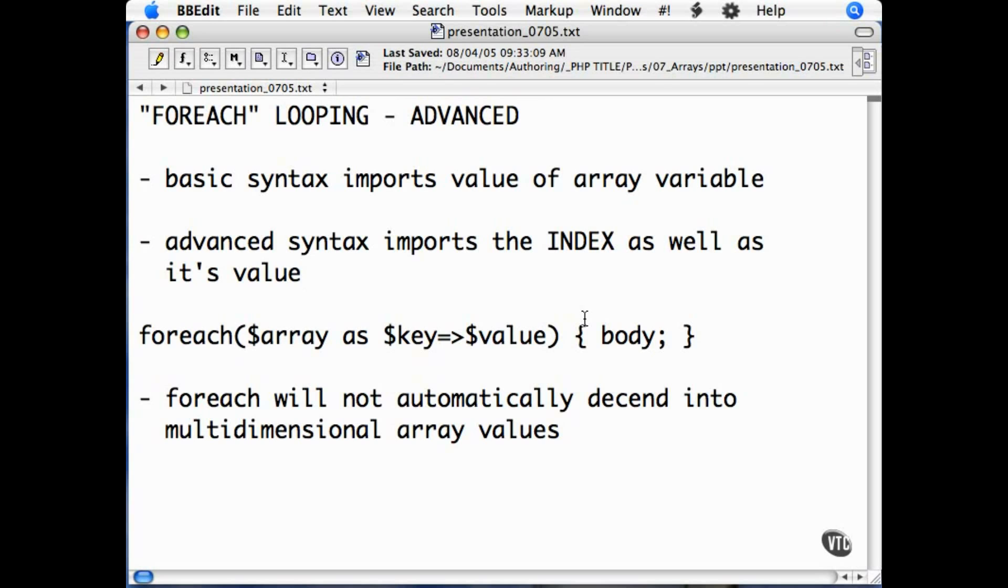Well, there's a simple addition to the foreach loop that you can use. The key variable, followed by an equal sign, followed by a greater than, and then the value variable. You recognize the syntax from the array assignment syntax when you're adding an array element with a specifically named key. In this case, as you loop through, you'll be able to reference the key as well as the element value in the array.